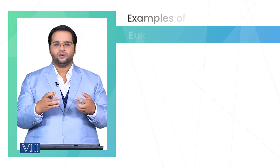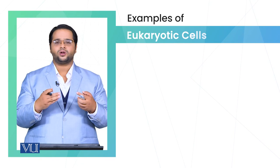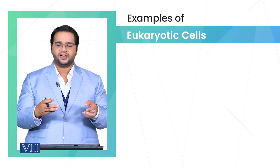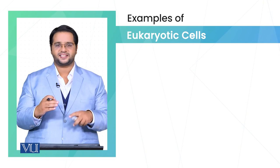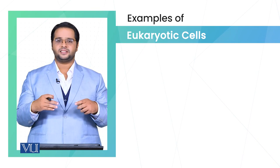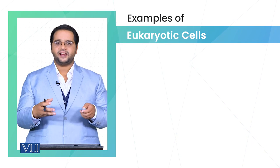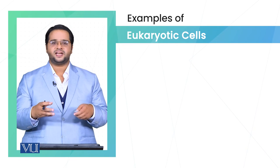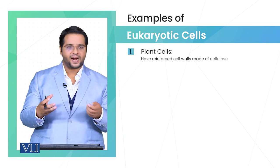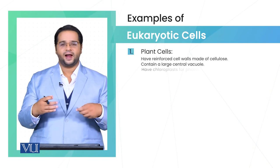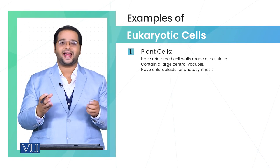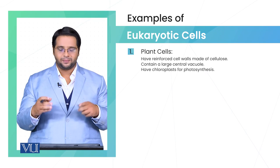Moving on, we are going to cover all the examples previously mentioned about the eukaryotic cell. These examples are very important to understand the structure of the eukaryotic cell. First of all is the plant cell. The plant cell has a cell wall, which is lacking in the generalized animal cell.